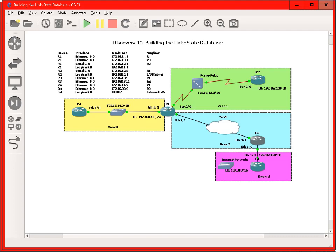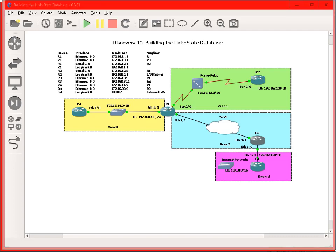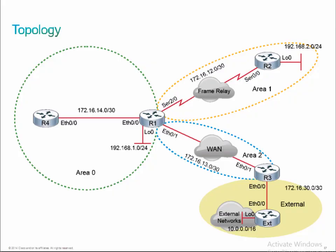Then we have type 2 LSAs, which are probably going to be generated in area 0 and certainly in area 2 as well — even though it looks like a WAN connection, it's really just an Ethernet cable connected between the two routers. And then finally in area 1, the serial link allows us to describe the frame relay link, and we'll have to look at how that frame relay link is provisioned, what is the OSPF network type, and so on.